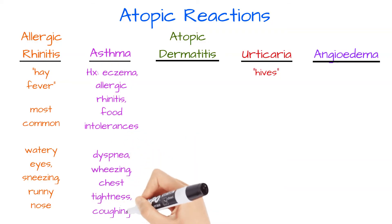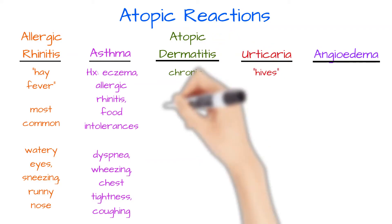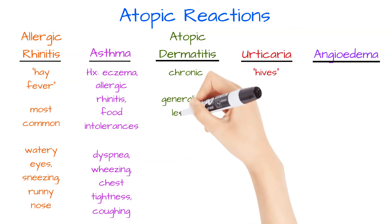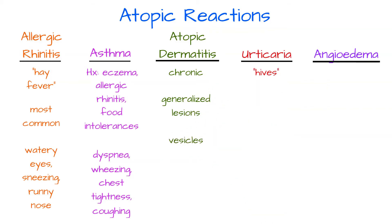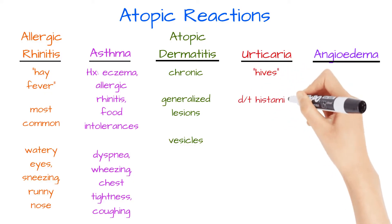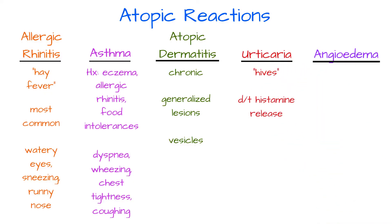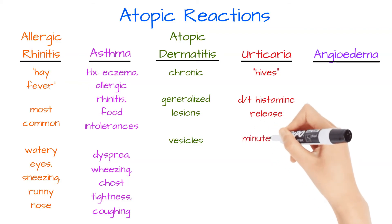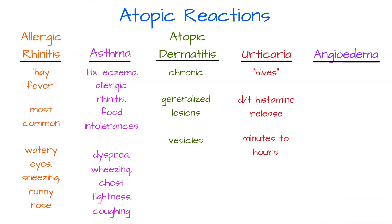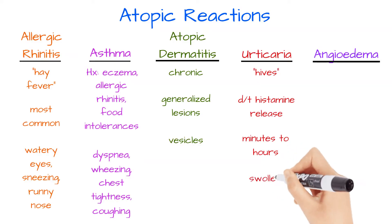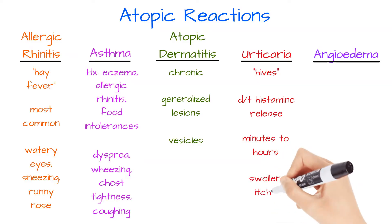Atopic dermatitis refers to chronic skin conditions which involve generalized lesions. This can include vesicles, which are fluid-filled blisters. Hives or wheals can happen quickly after allergen exposure due to histamine release. They can last for just a few minutes or hours, and can be varying degrees of pink in color, as well as swollen and very itchy.